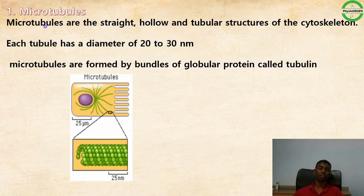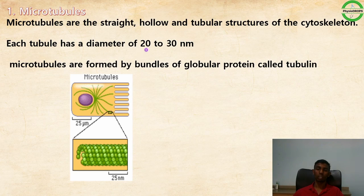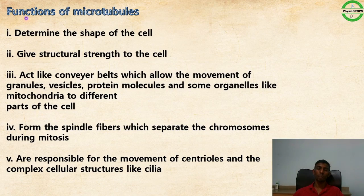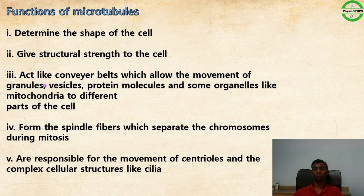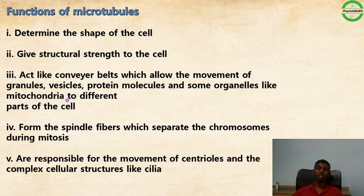Microtubules are hollow, tubular structures within the cytoskeleton, with a diameter of 22–30 nm, formed by bundles of globular protein called tubulin. Their functions include determining the shape of the cell, providing structural strength, acting like a conveyor belt for movement of granules, proteins, and organelles like mitochondria to different parts of the cell, forming spindle fibers to separate chromosomes during cell division, and enabling movements of centrioles and cellular structures like cilia.